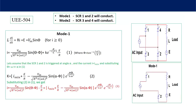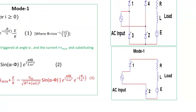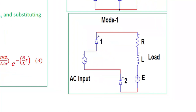There are two modes of operation of this single-phase converter. In mode 1, thyristors 1 and 2 will conduct, and in mode 2, thyristors 3 and 4 will conduct. Both modes are equivalent to each other, so we will analyze only mode 1, and based on that we can find the other important parameters. In mode 1, when thyristors 1 and 2 are conducting, the equivalent circuit diagram can be seen here.